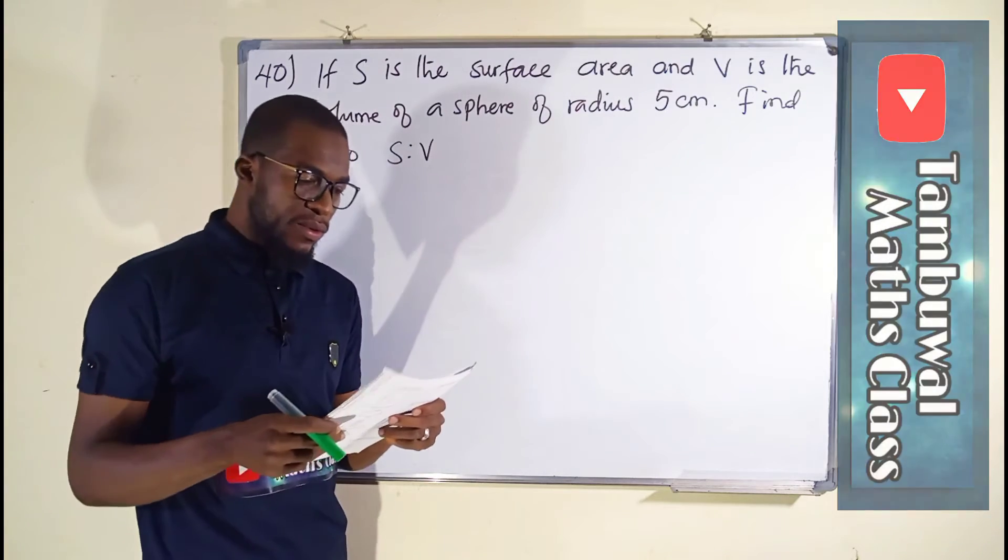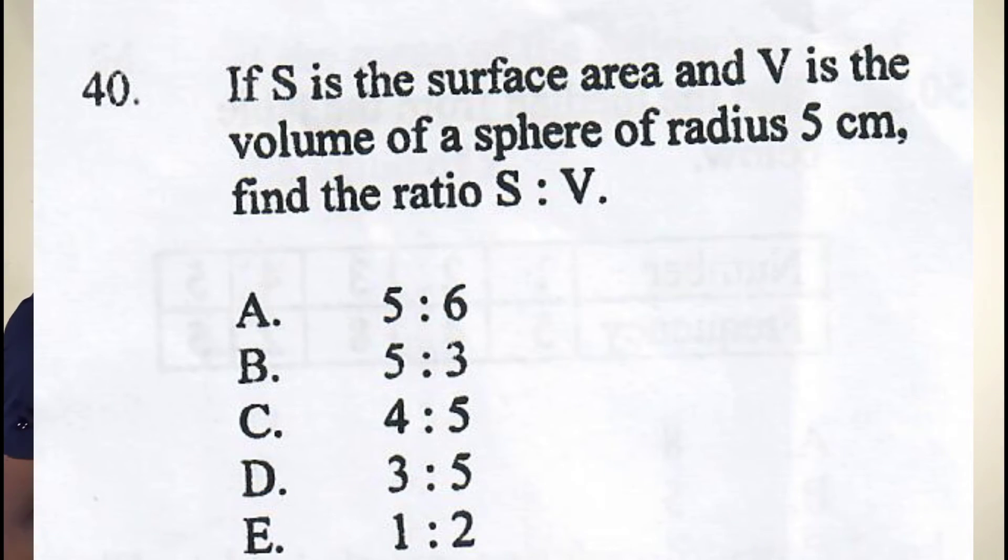Question number 40. It says, if S is the surface area and V is the volume of a sphere of radius 5 cm, we are asked to find the ratio of S to V.